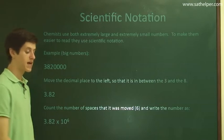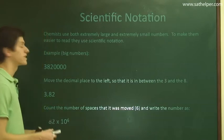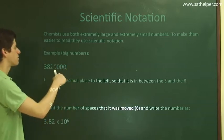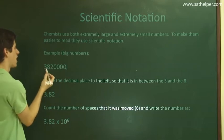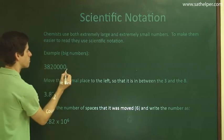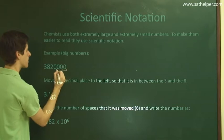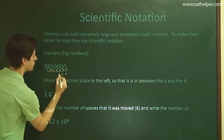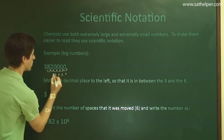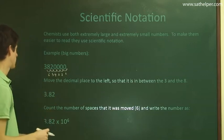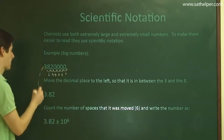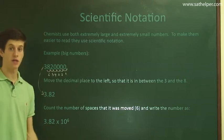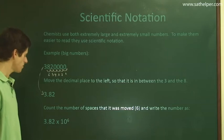And so if you want to write it in scientific notation, what you first do is you take the decimal point, which is here, and you move it as many times as you have to to go between the first and second number. And so if you see, we made 1, 2, 3, 4, 5, 6 jumps. And that gives us the number 3.82. There's no need to write those zeros anymore. They don't tell us any special information.